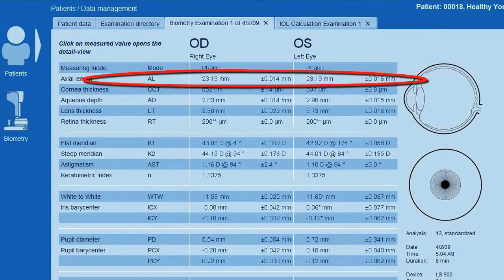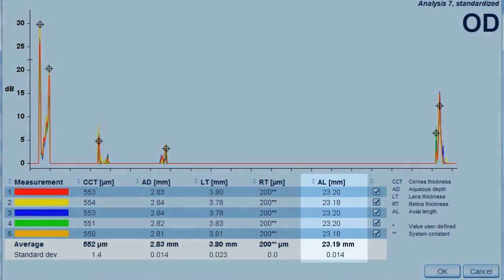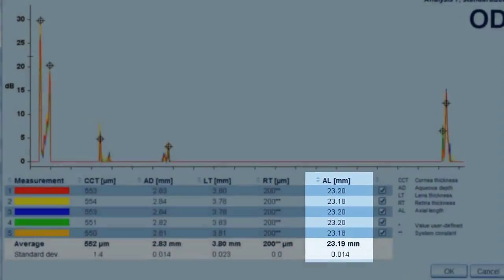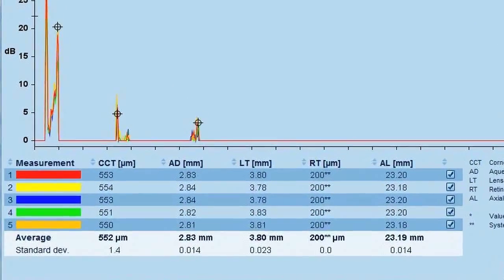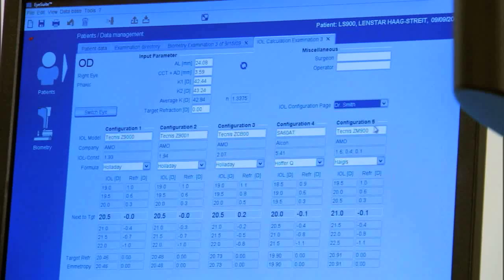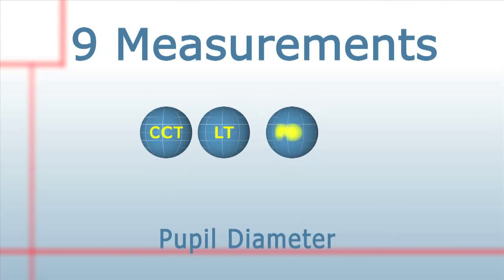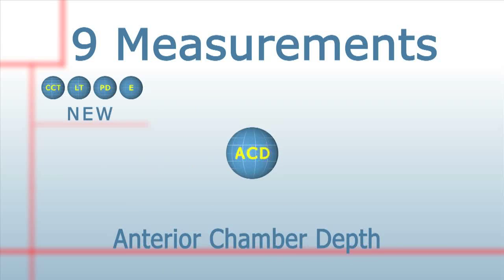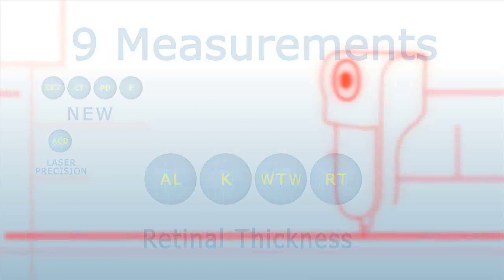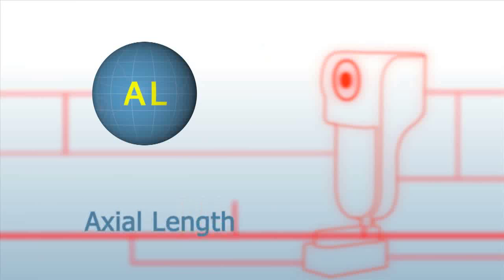With LenStar's axial length measurement combined with the other eight measurements, you can finally feel secure in your results. Although not a new measurement, with LenStar's advanced technology you can count on accuracy, which translates into improved outcomes from all your IOL calculation formulas. Faultless outcomes will finally be attainable with all measurements done on the central visual axis — axial length is one of nine measurements working together to deliver instant results. The combination of measurements offers a significant advantage over competitors.